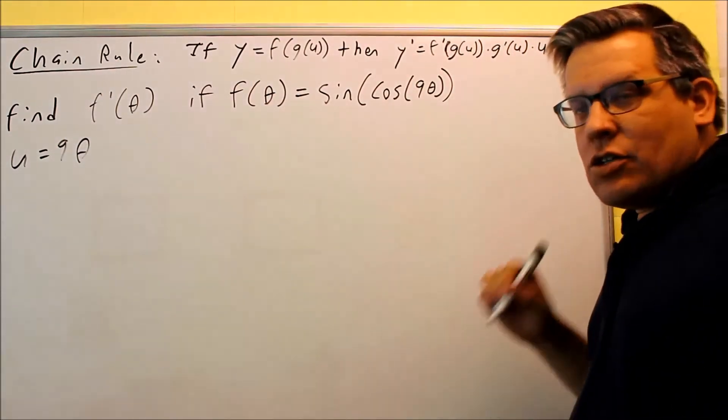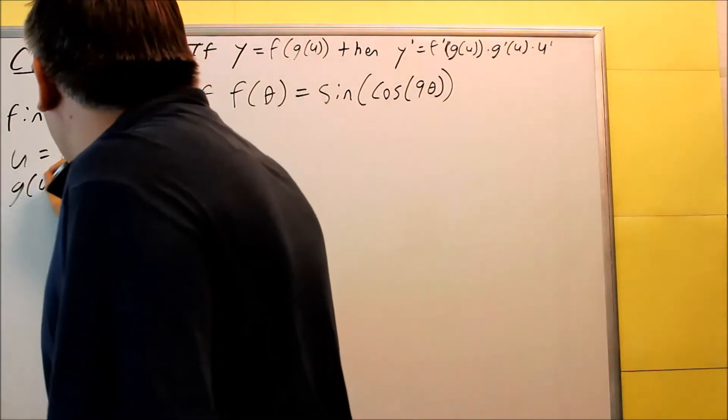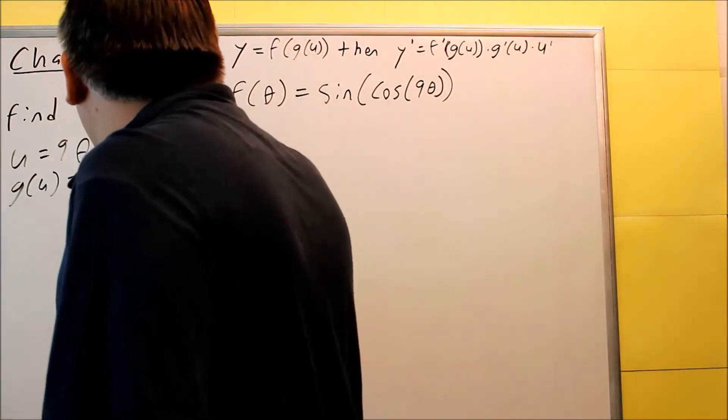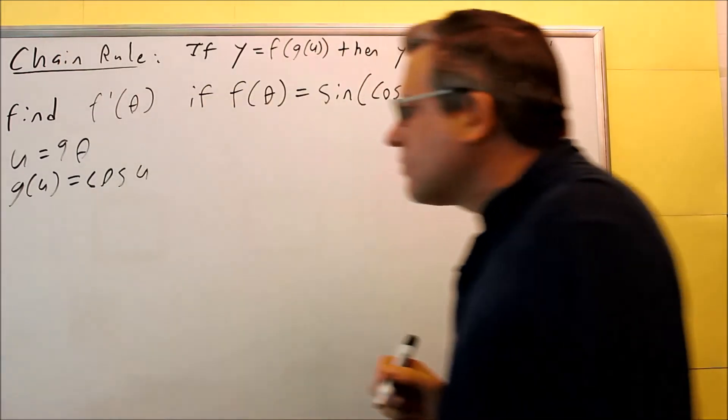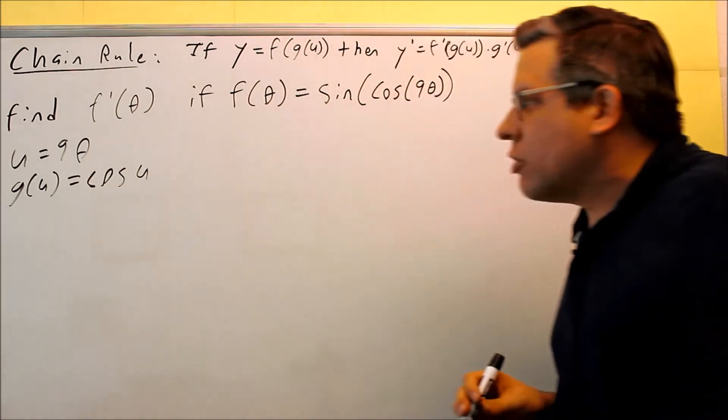Next, I want to find g of u. So g of u is going to be cosine of u, or cosine of 9θ. In this case, we'll write it as in terms of u.